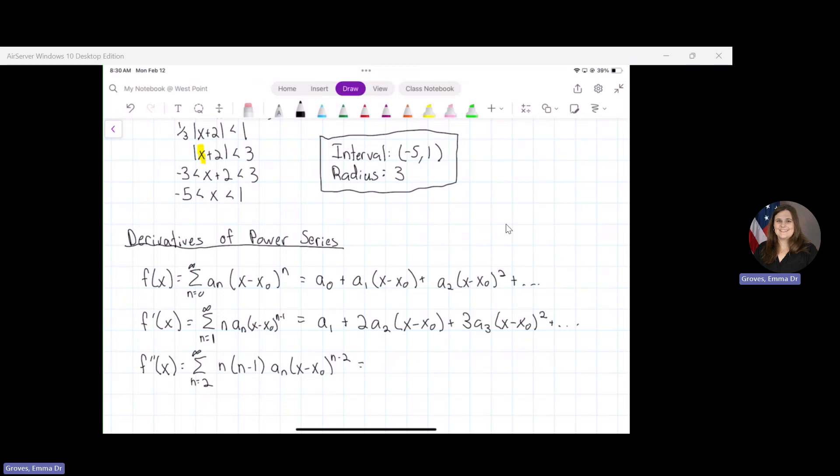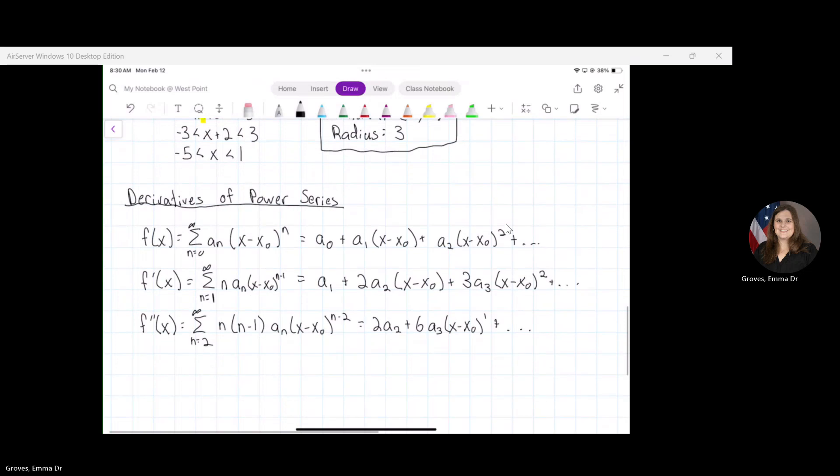And then if you wanted to write out a couple terms, you would have 2a_2 plus 6a_3(x - x_0) to the first, plus dot dot dot. Not too bad.